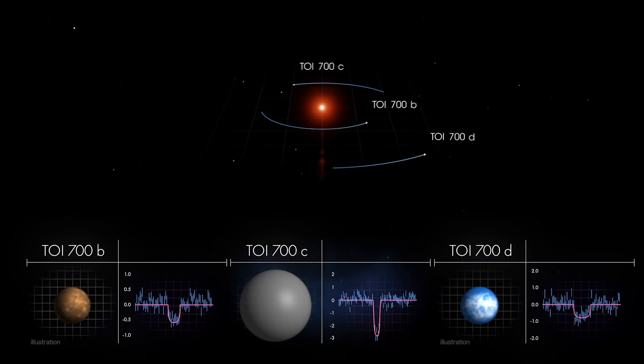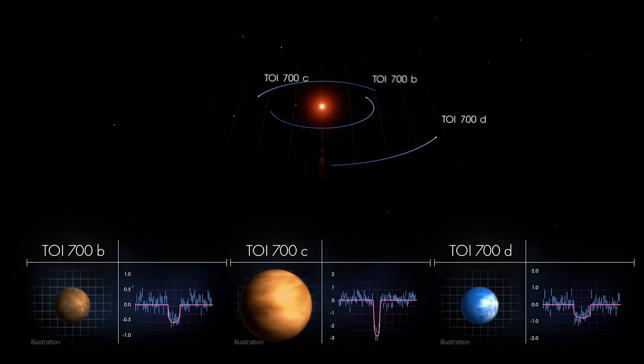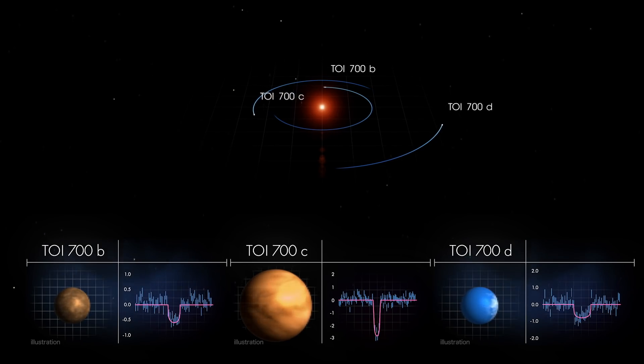The middle world is more than twice as large and most likely made of gas. All three may be tidally locked, rotating just once each orbit, so the same side always faces the star.